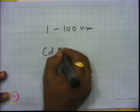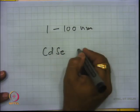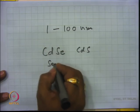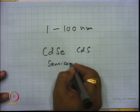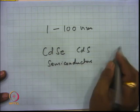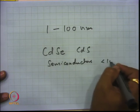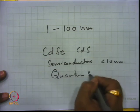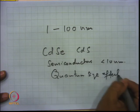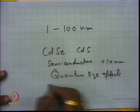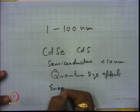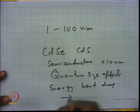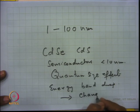We studied quantum dots like cadmium selenide or cadmium sulphide. If you make particles of such semiconductors with dimensions less than say 10 nanometers, you can observe quantum size effects. Quantum size effects lead to changes in the energy band diagram, and this change in the energy band diagram leads to a change in color.